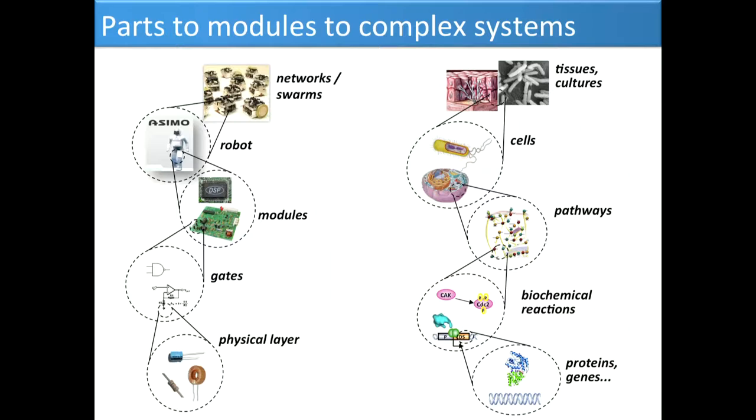Can we start with proteins and genes, connect them to create basic biochemical reactions that perform basic logic and control operations, create customized pathways with more complex information processing, embed those into cells, and then get the cells to coordinate their behavior so that we can have programmable cultures of bacteria or programmable tissues? We spend a lot of time in the field trying to understand how to take what's known in other engineering disciplines and apply that to biology.